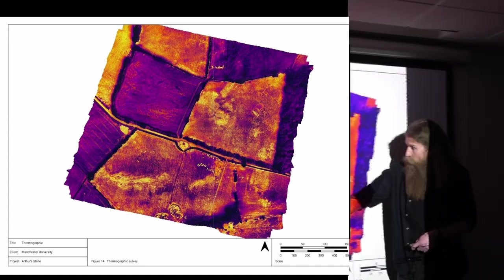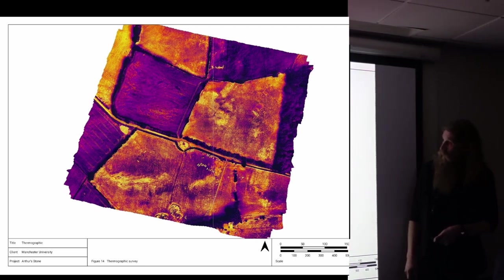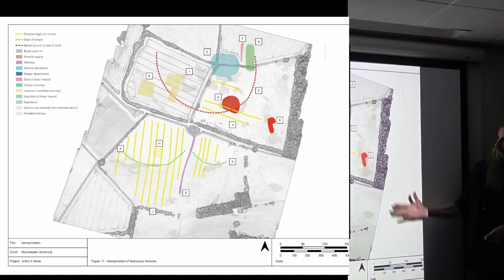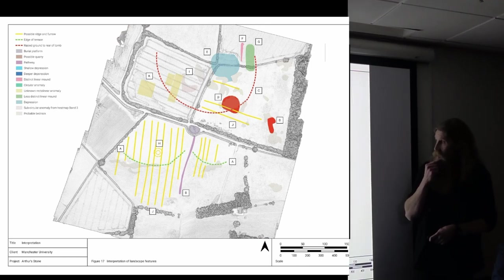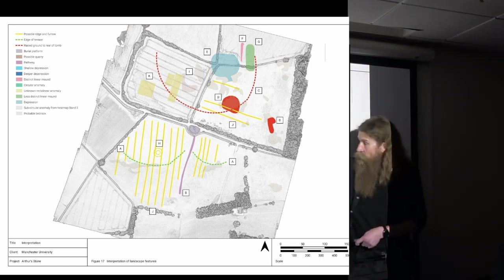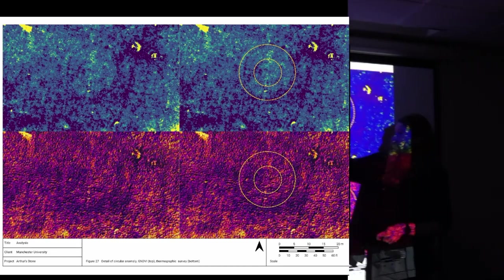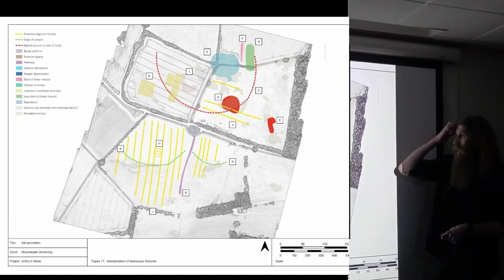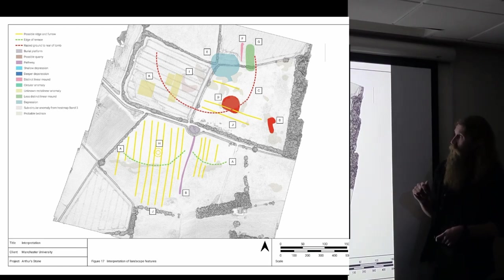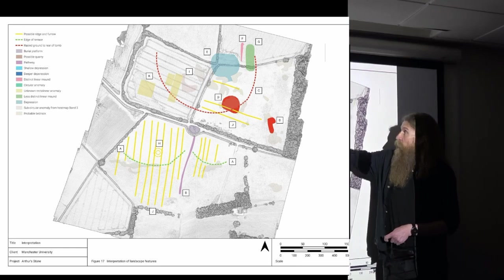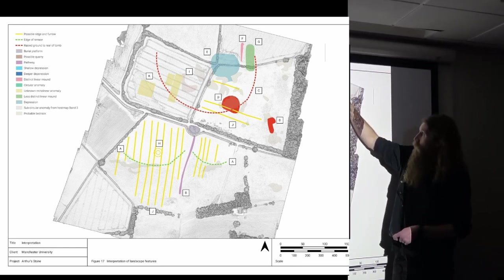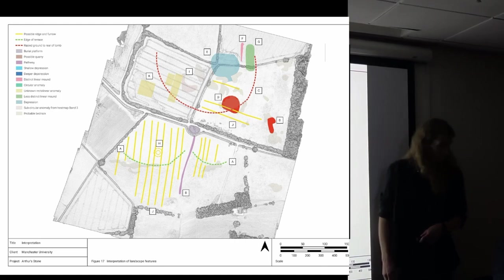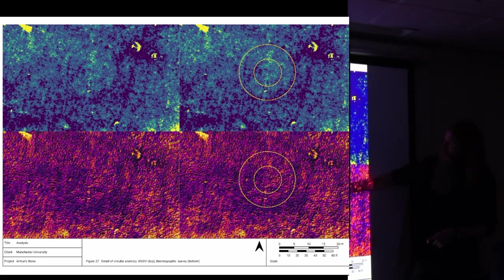The thermal again nicely showed up the bedrock just due to the temperatures, and another feature which is over here which we'll look at. This is the interpretation of all the data sets. There's some ridge and furrow, there's this feature here, there's some rectilinear features in the field which we're not really sure what they are, they may have been treating the crop. There's a potential circular feature here. This was a feature of very great interest which is potentially a hitherto unknown long barrow.